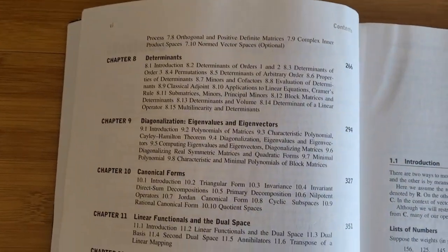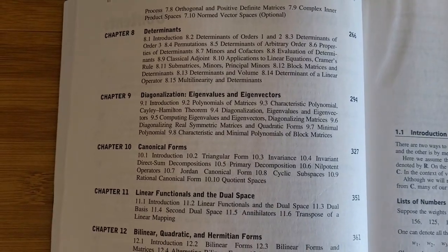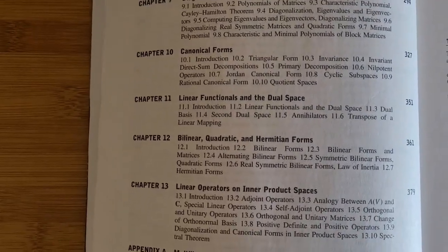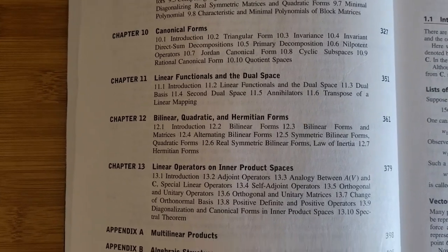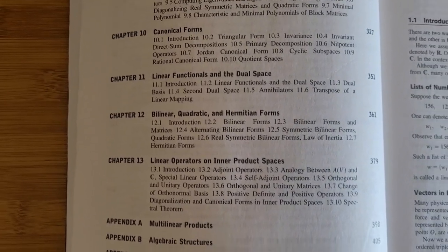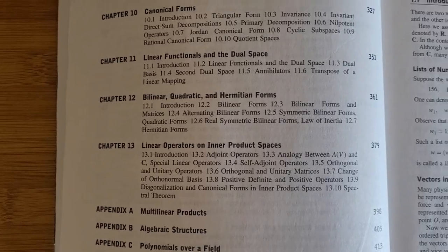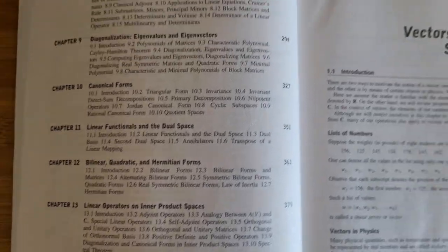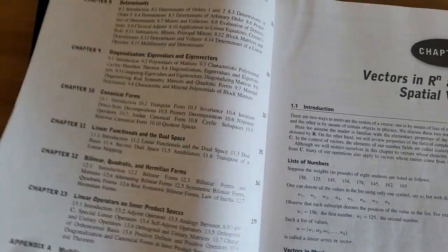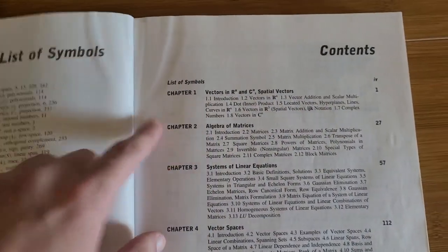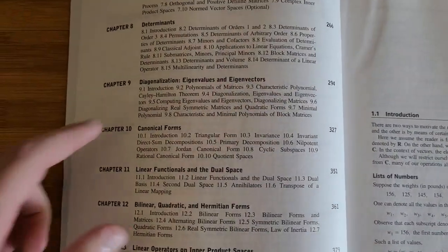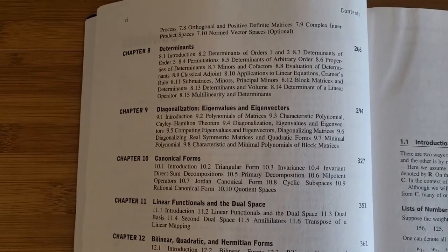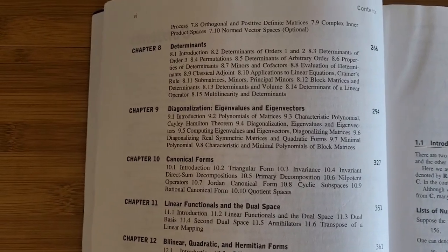Chapter 8 is on determinants, followed by diagonalization, and we have canonical forms, linear functionals in the dual space, bilinear, quadratic, and intermediate forms, and then finish off with linear operators on inner product spaces. Chapters 1 through 9, diagonalization, is basically going to pretty much meet the contents of a first course in linear algebra.